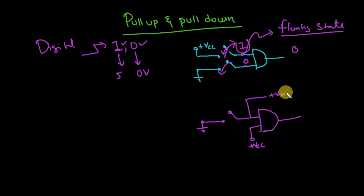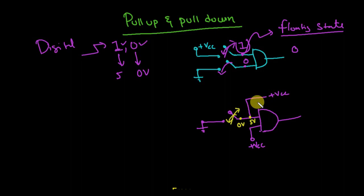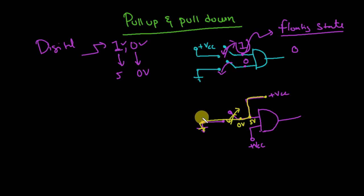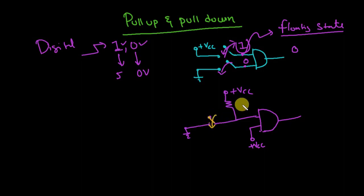What I'll do is simply connect this point to plus VCC. If I close the switch I get 0 volts here; if I open it I get plus VCC, which means 5 volts. But there is a problem — whenever I close that switch there is a short between plus VCC and ground. This is not acceptable because it's a short circuit with no resistance to oppose current flow, causing a huge amount of current, which will damage the supply.